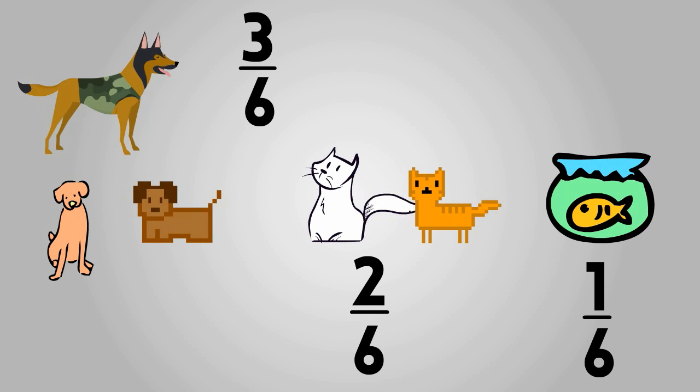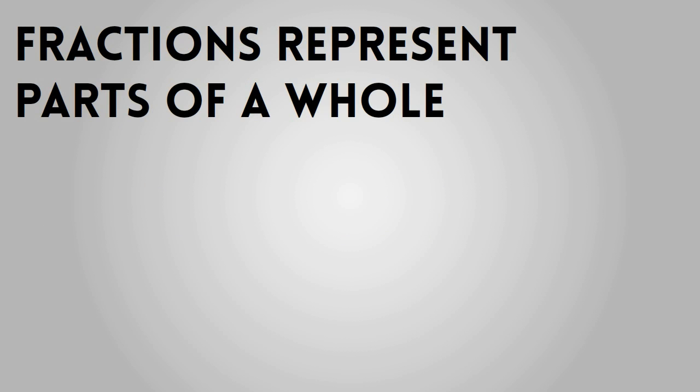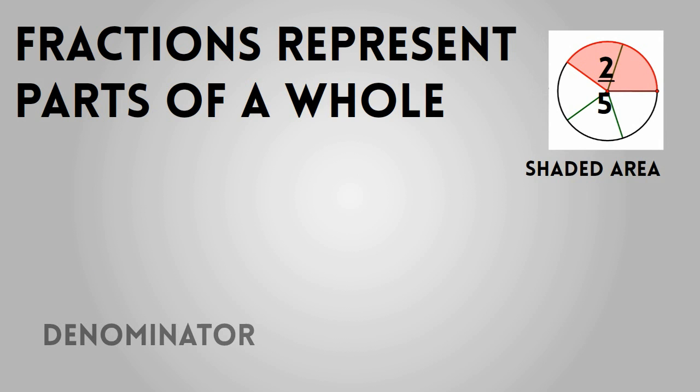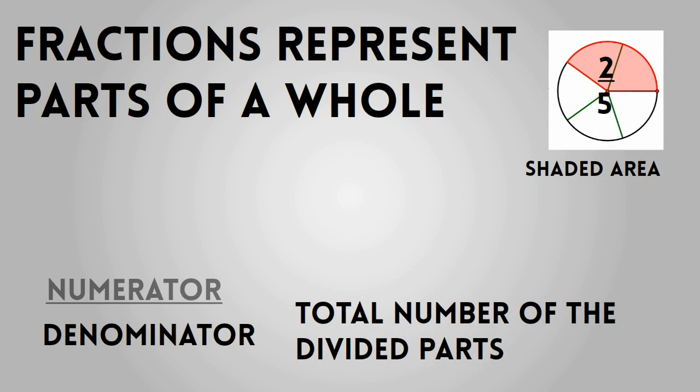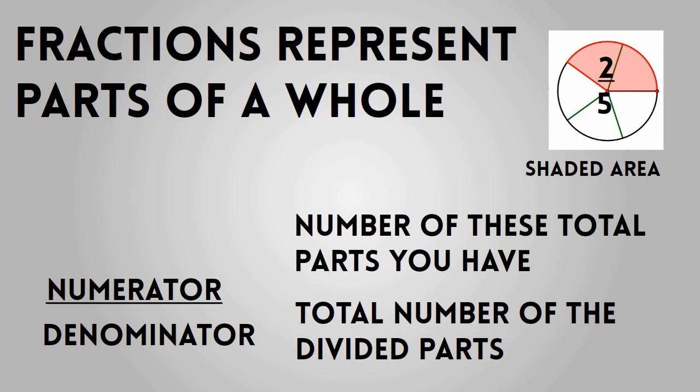In summary, fractions are used to represent parts of a whole. A fraction has two parts. The bottom number represents how many total parts the object has been divided into. The top number represents how many parts of these you have.